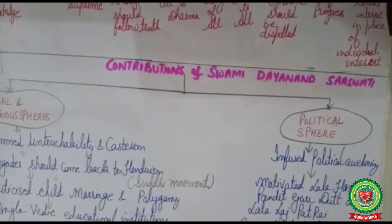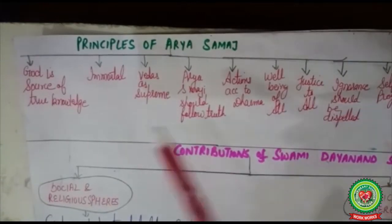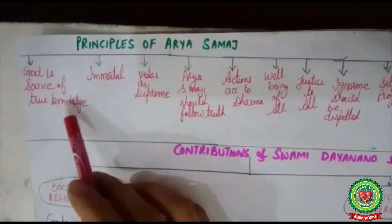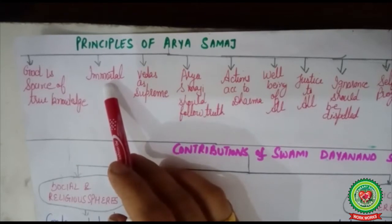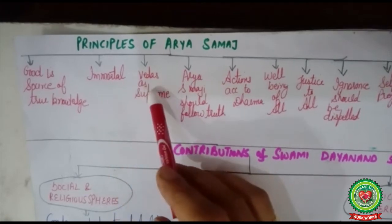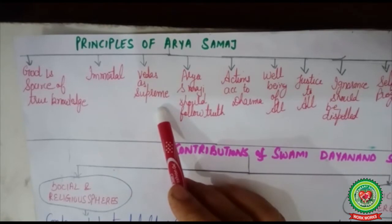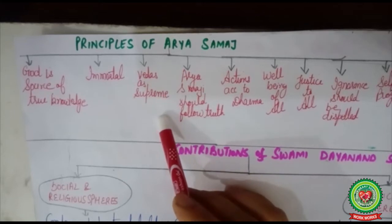The first principle of Arya Samaj is that God is the source of true knowledge. By saying this, Arya Samaj discarded the idea of priesthood. The second principle is that God is immortal — He has never taken birth and will never die. They also believed that the Vedas are supreme and that we do not need to go to Western countries to attain knowledge, as our Vedas are the true source of knowledge.